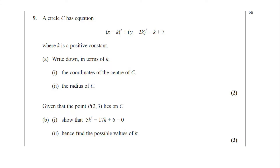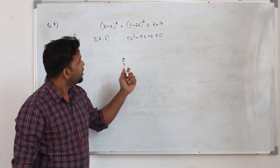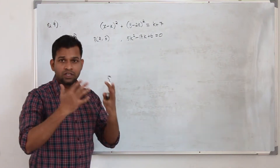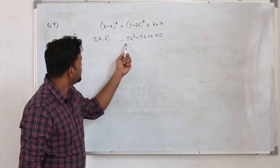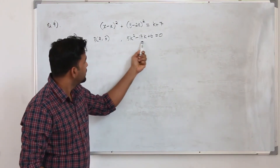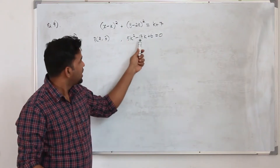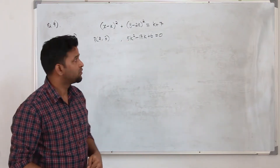Part B: given that the point P of 2 comma 3 lies on C, show that 5k squared minus 17k plus 6 equals 0, and then find the possible values of k. The question carries three marks. In part B, this point P of 2 comma 3 lies on the circle, and they want you to show that 5k squared minus 17k plus 6 equals 0, then find the possible values of k.